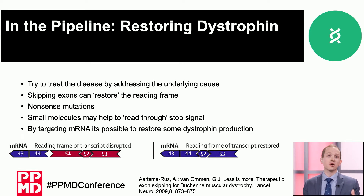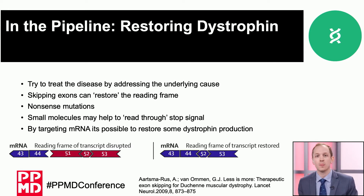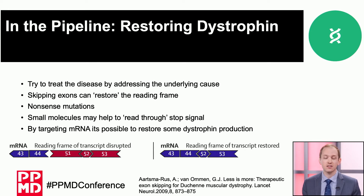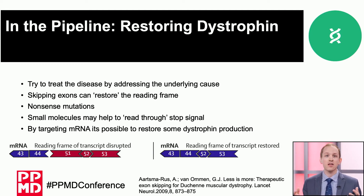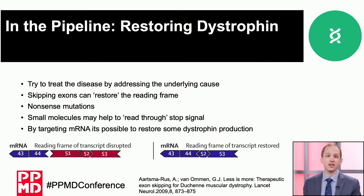We're going to go all the way back to the DMD gene and walk out from there. As most people watching are aware, the DMD gene is comprised of 79 exons, and those exons contain the information needed to make the protein. From the gene, that information is transcribed into messenger RNA, where all the exons need to be lined up like pieces of a puzzle and then translated into the protein.